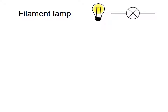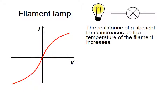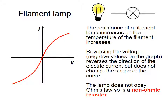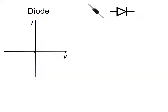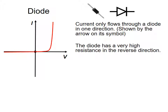Looking at the filament lamp in more detail: if you plot current against voltage for a filament lamp you will not get a straight line, because as temperature of the filament increases, the resistance increases. If you reverse the voltage the reverse effect is seen. This is a non-ohmic resistor. A diode is another example — current only flows in one direction and it has very high resistance in the reverse direction, shown by the flat line on the graph.